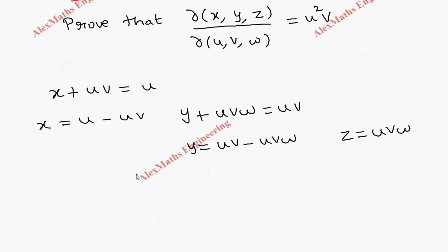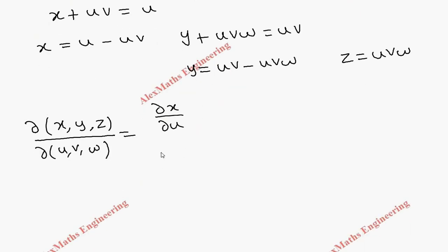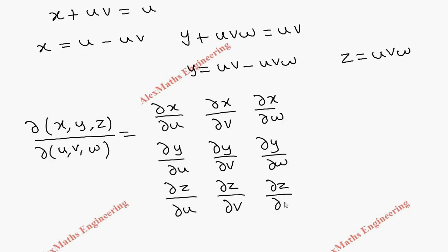Now we are going to find ∂(x,y,z)/∂(u,v,w), which equals the determinant with first column ∂x/∂u, ∂y/∂u, ∂z/∂u; second column ∂x/∂v, ∂y/∂v, ∂z/∂v; and third column ∂x/∂w, ∂y/∂w, ∂z/∂w. We have to evaluate this determinant.